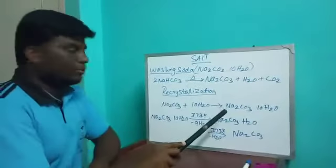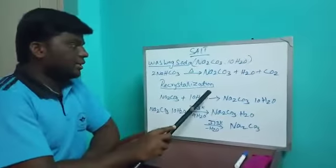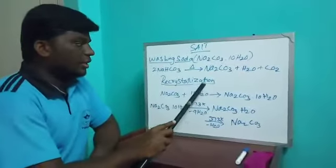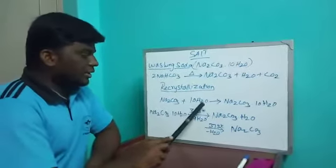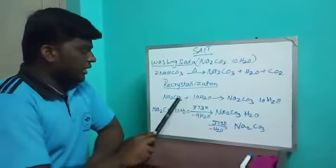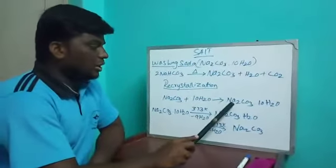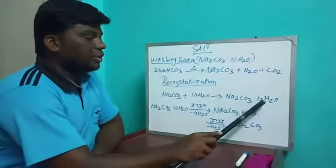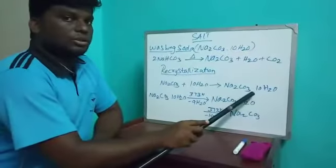Then the further process: we have to recrystallize it. From recrystallization, sodium carbonate is added with 10 molecules of water. Now it gives sodium carbonate into 10H2O. What is this name? It's washing soda.